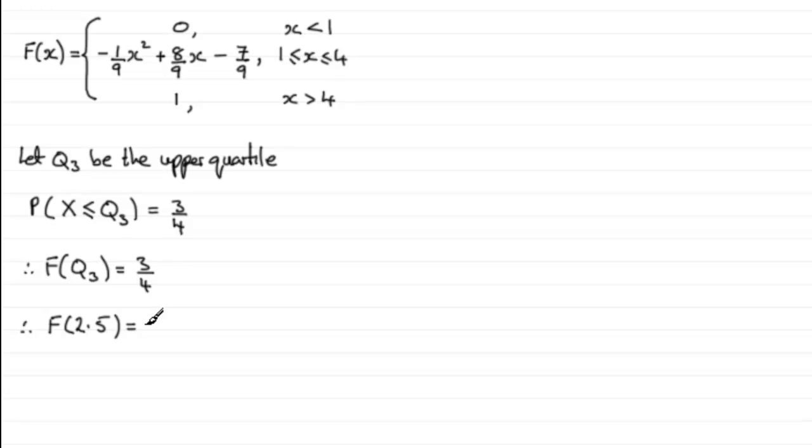So it's going to be equal to minus one ninth times 2.5 squared, plus eight ninths of x, x being the 2.5, and then minus seven ninths. And if you work that out in your calculator, surprise surprise, it actually comes out at 0.75.